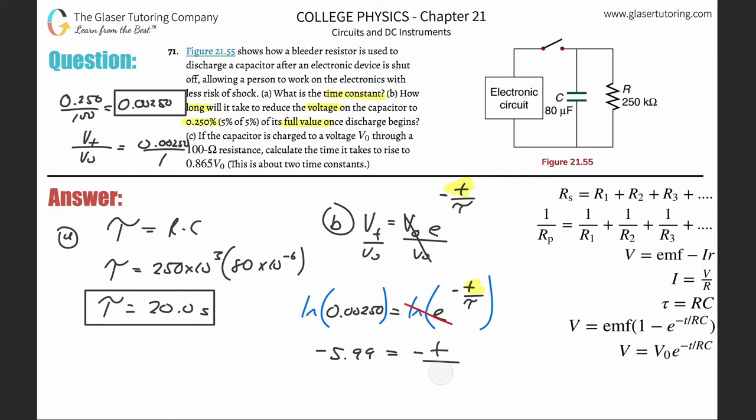Tau we know to be 20, so plug in 20. Just do a cross multiplication. T is equal to 5.99 times 20. Using the exact value, close to six times 20, I will round to 120. The minus signs cancel. So 120 seconds.